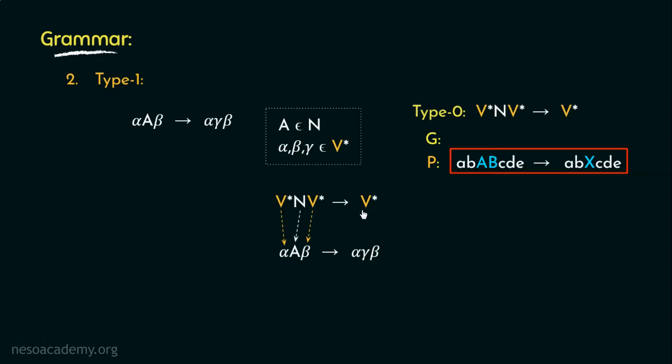Then the left context alpha and the right context beta are V star as described in here. And since alpha, beta, gamma all belong to V star, hence V star on the right hand side of the production is represented as alpha gamma beta in here. Now, if these two are the same, then why we are calling it a different type?